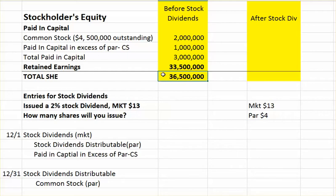Now we're going to declare a stock dividend, so the problem is going to tell us how much stock we're going to give away and what is the market value of the stock so we can create the journal entries. Here it says that we've issued a 2% stock dividend and the market value of that stock on the date of declaration is $13.